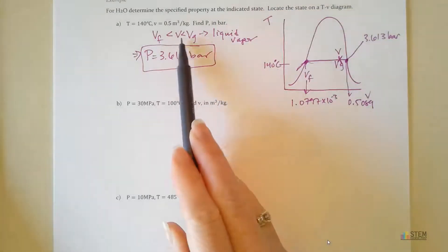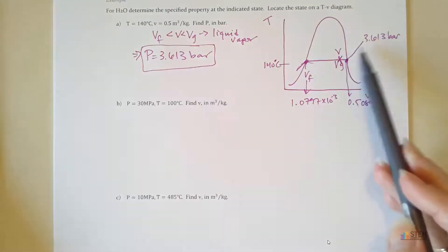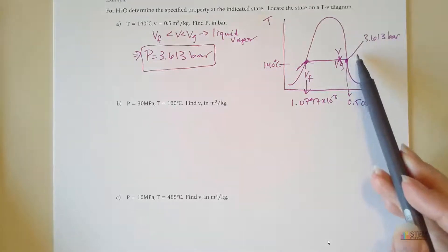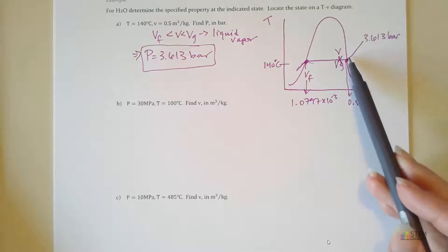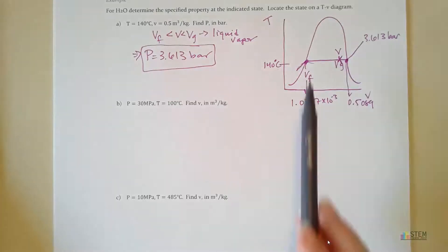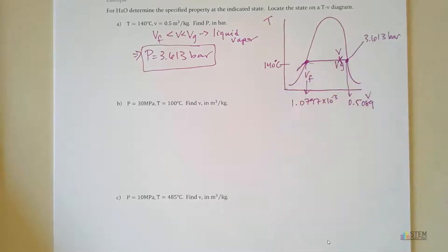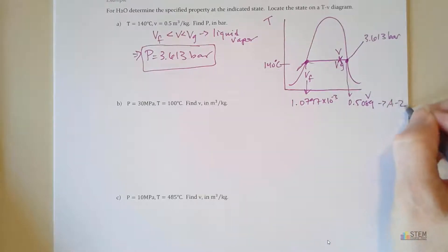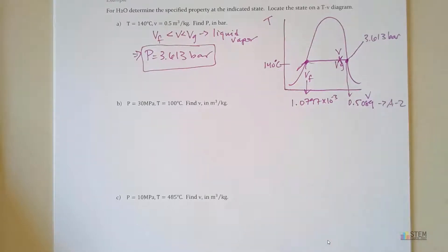Since V is greater than VF but less than VG, we have a liquid-vapor mixture. If our V were greater than 0.5089, we would need to switch to a different table, like the superheated vapor table. If it were less than VF, we would need something else. But for this case, we have a liquid-vapor mixture, and this was from Table A2 in the Moran book.